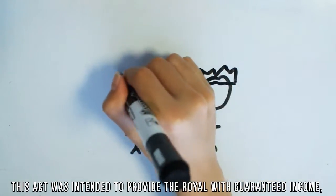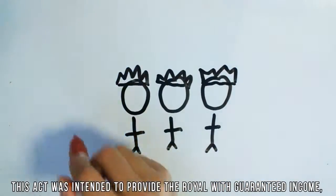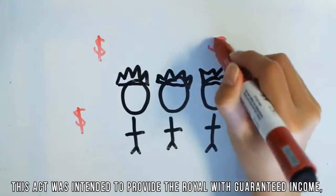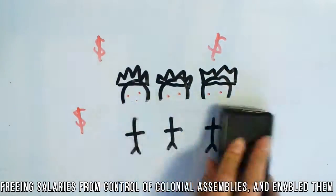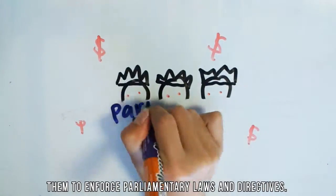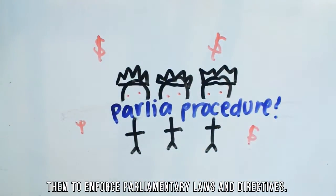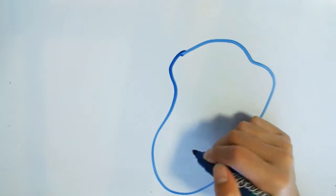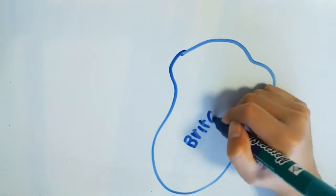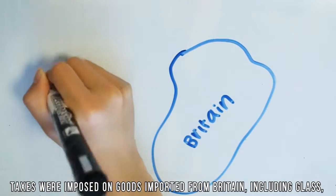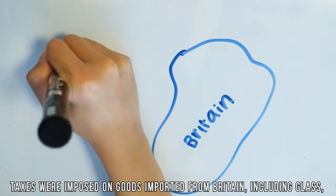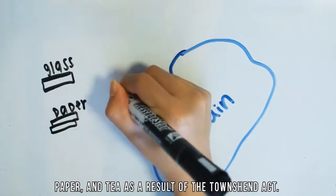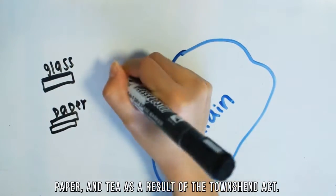This act was intended to provide the royal governors with a guaranteed income, freeing salaries from the control of colonial assemblies and enabling them to enforce parliamentary laws and directives. Taxes were imposed on goods imported from Britain, including glass, paper, and tea, as a result of the Townsend Act.